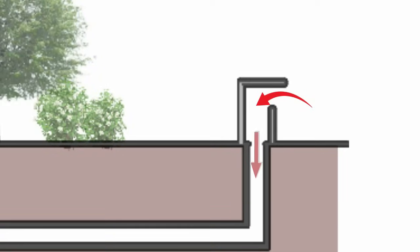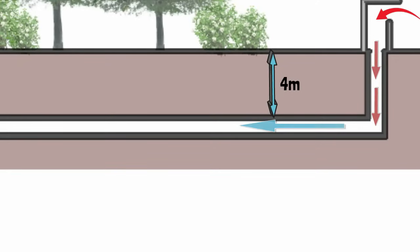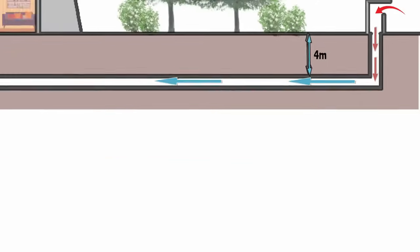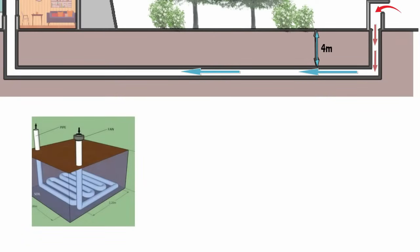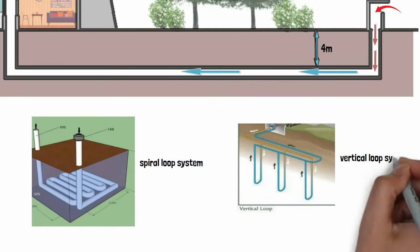The duct pipe is laid down 3 to 4 meters below the surface, which also depends on soil properties and water content. Higher length means increased heat transfer and higher efficiency, but it also makes it less economical. There are different kinds of loop systems, such as vertical and spiral loop systems, which improve efficiency.